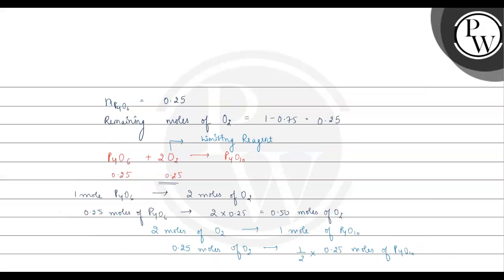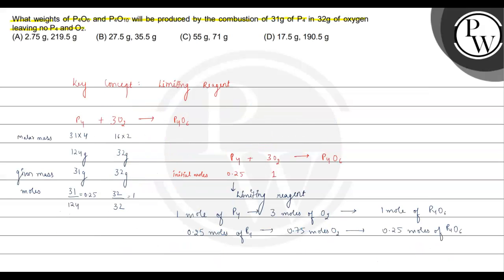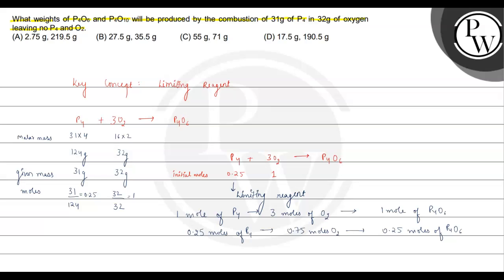So the final answer is option B: 27.5 grams of P4O6 and 35.5 grams of P4O10. Hope you understood it well.